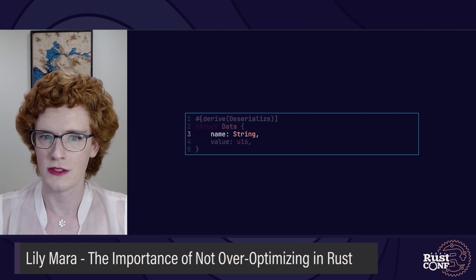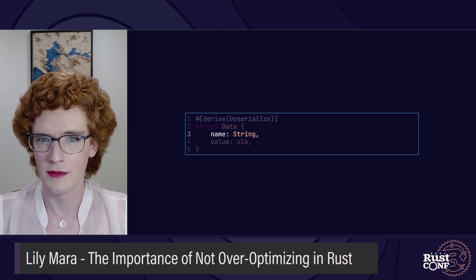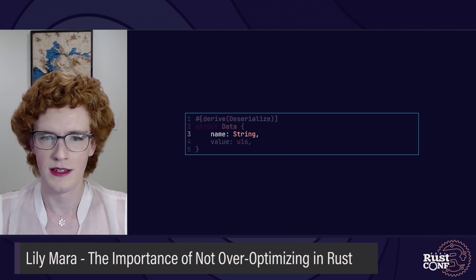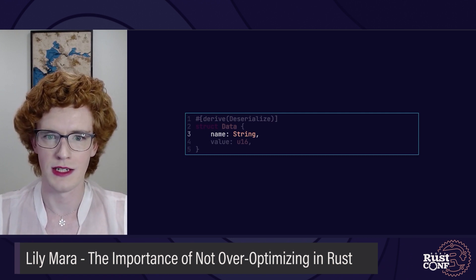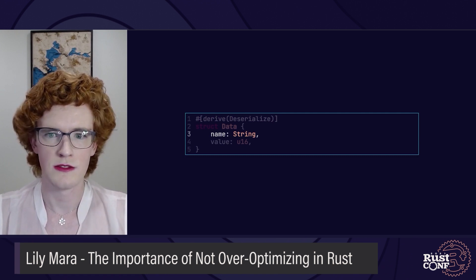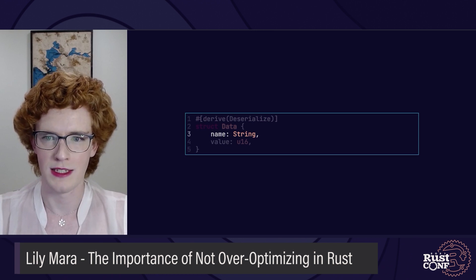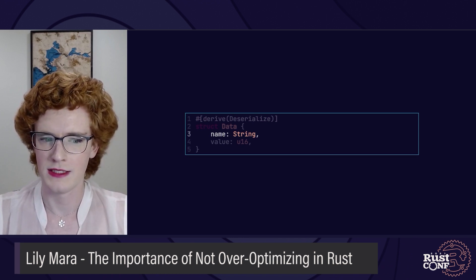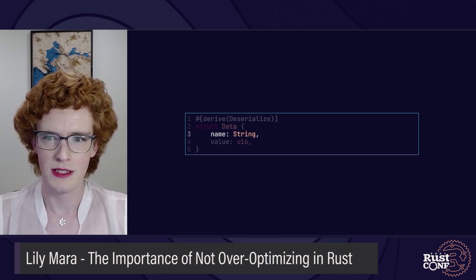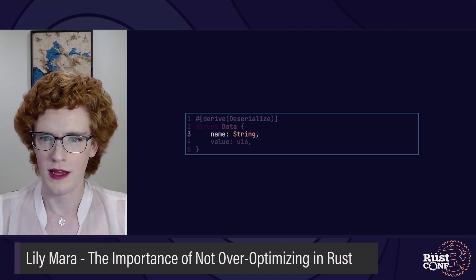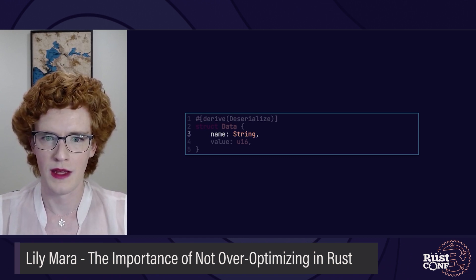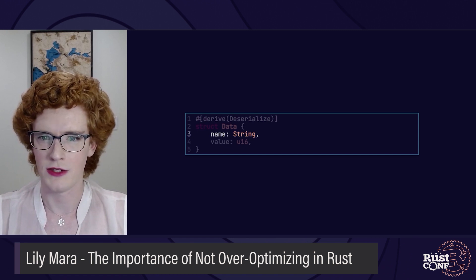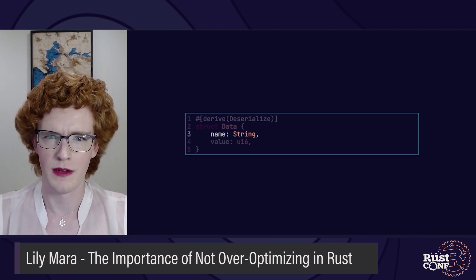It uses an owned string on the data struct and could be improved with the addition of lifetimes. Serde has support for deserializing borrowed strings instead of owned strings, so you can save on a lot of allocations. Since they're excited about the prospect of writing high-performance code, Gene leaves this conversation motivated to dive deep. They haven't used lifetimes yet, but they do a lot of reading to try and figure it out. After a lot of time and frustration, they have a solution that should be much more performant.